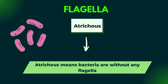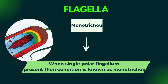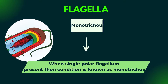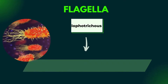Atrichous — 'a' means 'not'. Bacteria in which flagella are absent are called Atrichous. Atrichous means bacteria are without any flagella. Monotrichous — 'mono' means one. When a single polar flagellum is present, then the condition is known as Monotrichous.